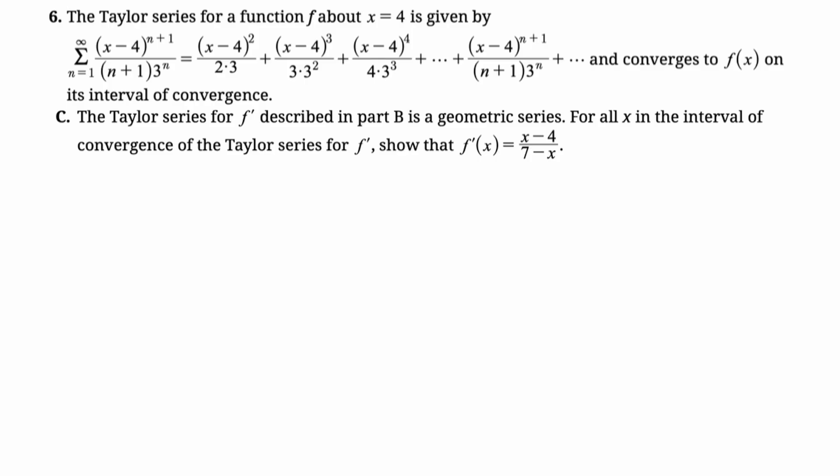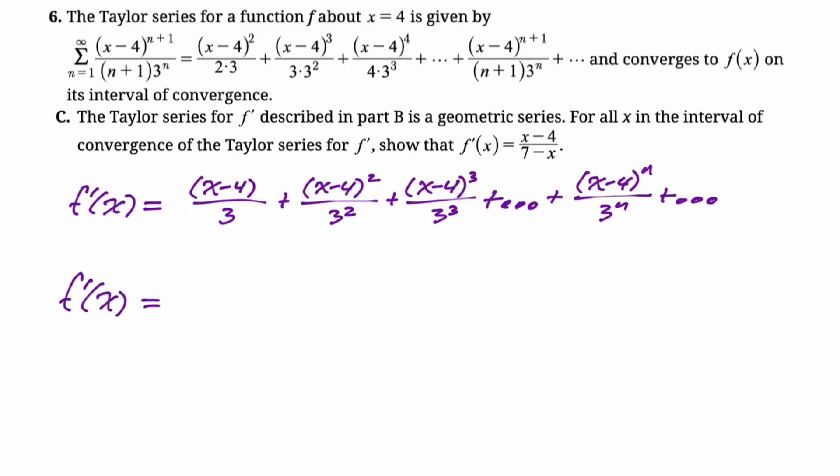The Taylor series for f prime described in part b is a geometric series. For all x in the interval of convergence of the Taylor series for f prime, show that f prime is x minus 4 over 7 minus x. They're asking us to just find the sum of a geometric series. So I'm going to say f prime of x is the first term, so x minus 4 over 3, divided by 1 minus the ratio. So you have to look at it and say, what am I multiplying each term by to get the new term?